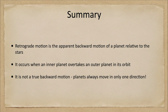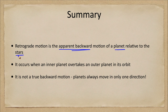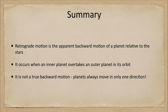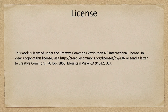To emphasize again, that is an apparent motion. So to summarize: retrograde motion is the apparent backward motion of a planet relative to the stars in the sky. It occurs when an inner planet overtakes the outer planet in its orbit, and it is not a true backward motion — planets always move in only one direction in a circular or elliptical orbit around the sun. That concludes this lecture on retrograde motion. We'll be back next week for another special topic in astronomy — have a great day, everyone, and I will see you in class.